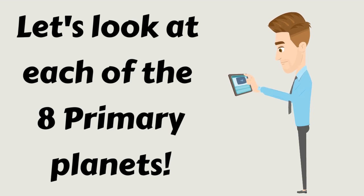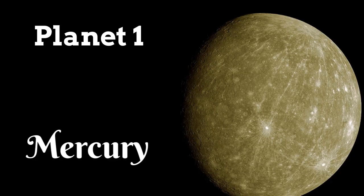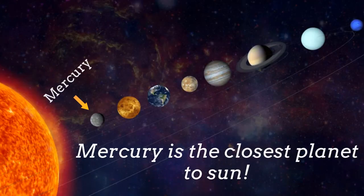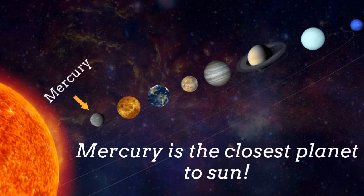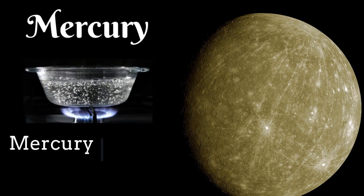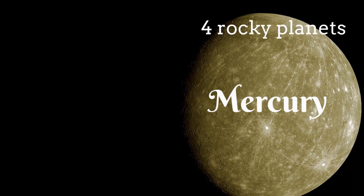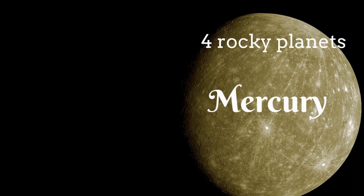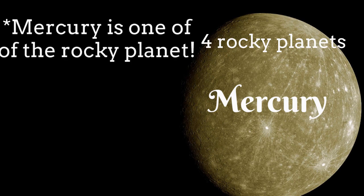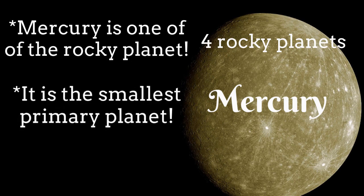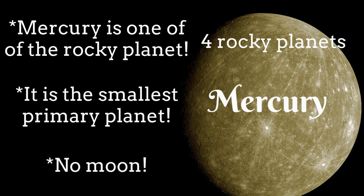Let's look at each of the 8 primary planets. 1st planet is Mercury. Here is the Mercury planet. You can see it is the closest planet to sun. So Mercury is very hot planet. In fact Mercury is 4 times hotter than boiling water. Do you know there are 4 rocky planets. And Mercury is one of them. So Mercury is a rocky primary planet. Mercury is the smallest primary planet. And it doesn't have any moon.